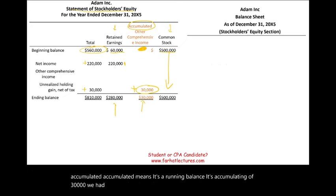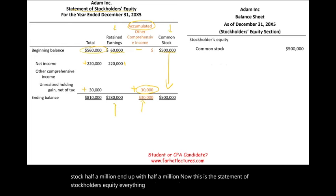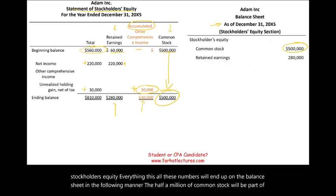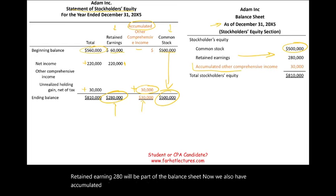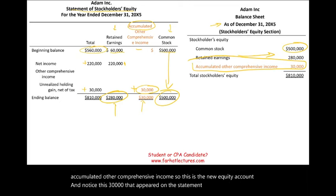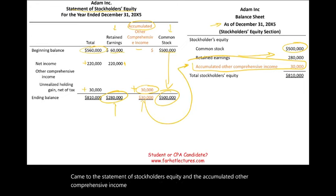Common stock at $500,000 stays at $500,000. This is the statement of stockholders' equity. All these numbers end up on the balance sheet: the $500,000 of common stock, retained earnings of $280,000, and accumulated other comprehensive income — a new equity account. Notice that the $30,000 appearing on the statement of comprehensive income came to the statement of stockholders' equity under accumulated other comprehensive income, and eventually made it to the equity section of the balance sheet. It never touched the income statement.